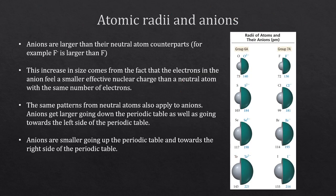We can also look at anions, which have a similar setup — basically every rule for cations but in reverse. With an anion, we are gaining an electron. Anions are atoms that have gained electrons. For example, fluorine in its neutral state can gain one electron to become F minus. Anions are larger because they now have more electrons, and this increase in size comes from the fact that electrons in the anion feel a smaller effective nuclear charge compared to the neutral atom.